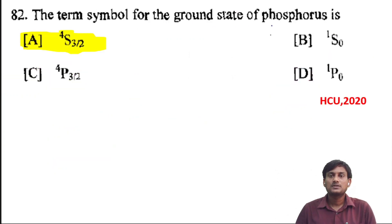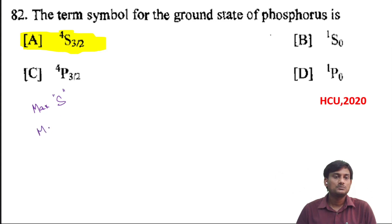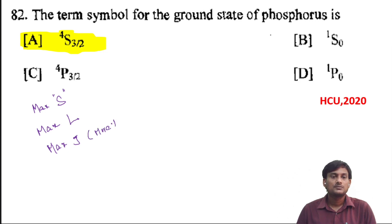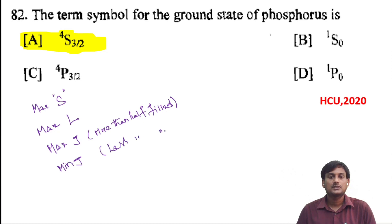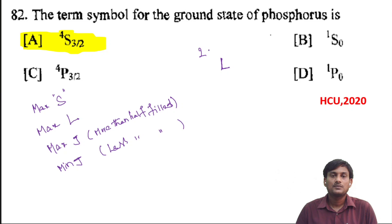The term symbol for the ground state of phosphorus. For the ground state, the term symbol should have maximum S value and also maximum L value. And also it should have maximum J value if it is more than half-filled. The term symbol is represented as L, with spin multiplicity 2S+1 and J.